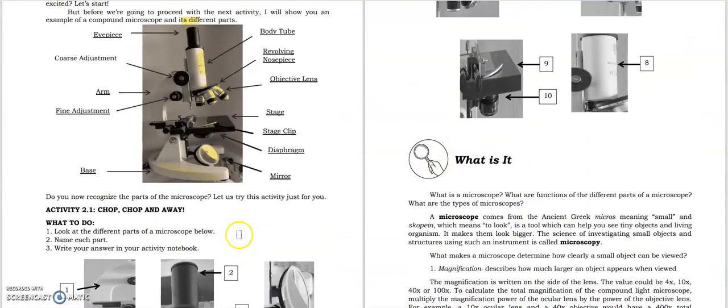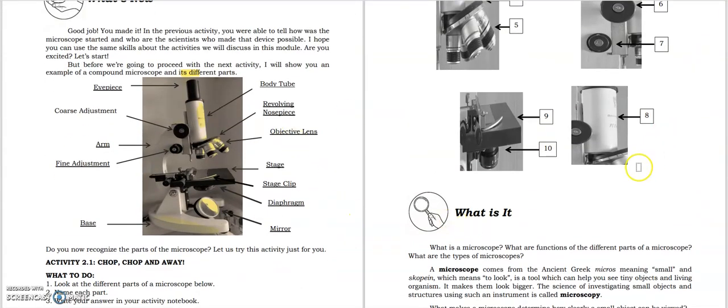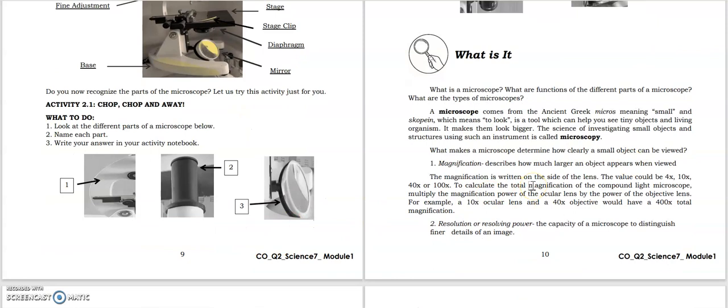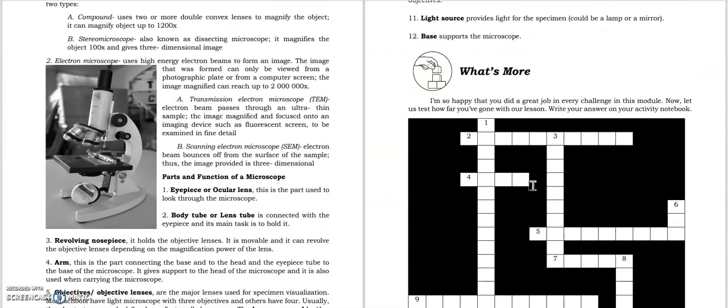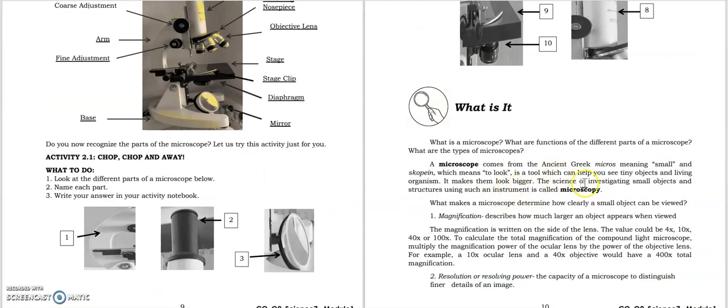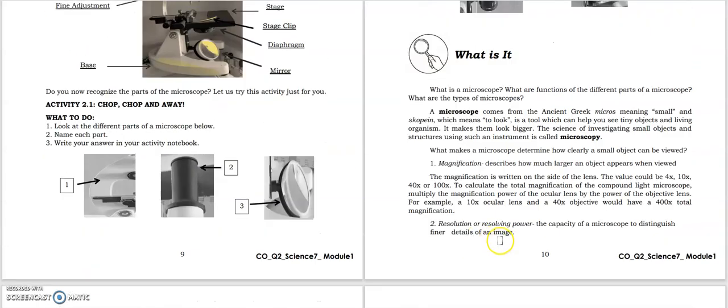We were already able to name the parts. Now let's proceed to the 'what is it' section so we don't run out of time. We're going to learn the function of the microscope and the terms used. Microscope comes from the ancient Greek 'micros' meaning small and 'scopein' meaning to look. It's a tool which can help you see tiny objects and living organisms. The science of investigating small objects using such an instrument is called microscopy.